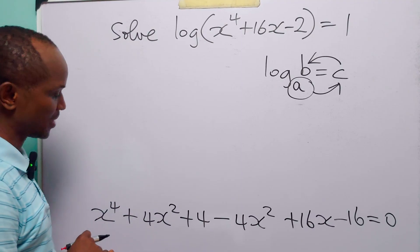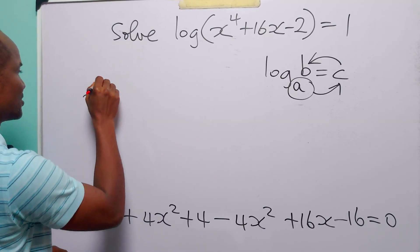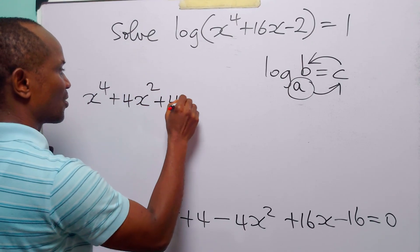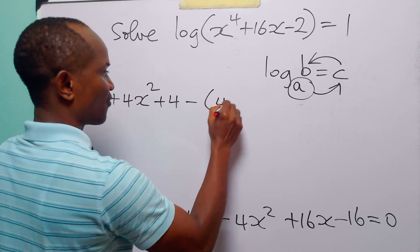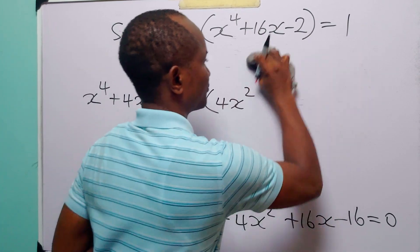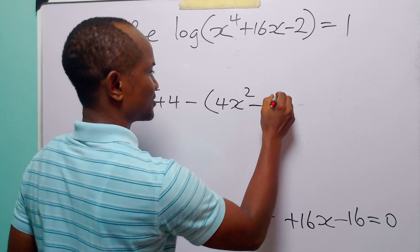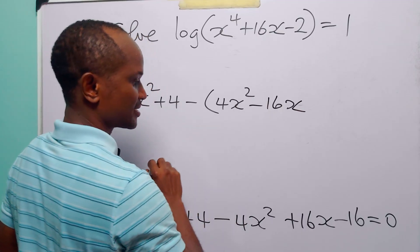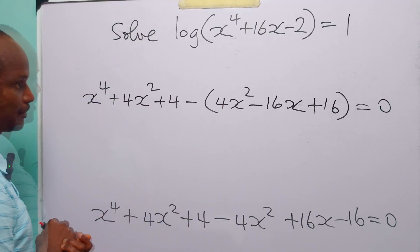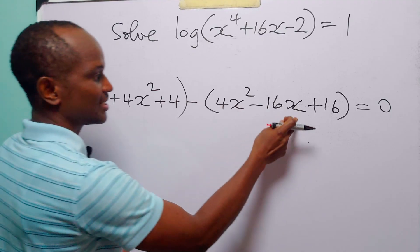Adding and subtracting the same quantity on one side of an equation doesn't change the equation in any way. Rearranging, we have x to the power 4 plus 4x squared plus 4, minus 4x squared minus 16x plus 16, equal to 0. It is very easy to see that the first group is a perfect square and the second group is also a perfect square.